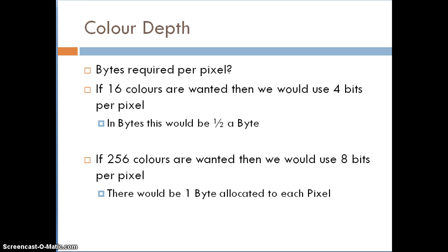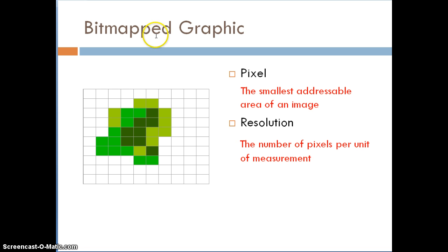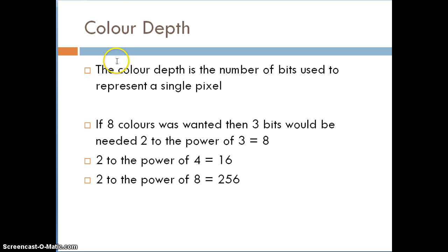In this video then, we've looked at a number of key terms. We've looked at bitmapped graphic, where a bitmap is made up of a series of zeros and ones. We've looked at pixel, which is the smallest addressable area of an image. Resolution, this is the number of pixels per unit of measurement. And we've looked at color depth. The color depth is the number of bits used to represent a single pixel.